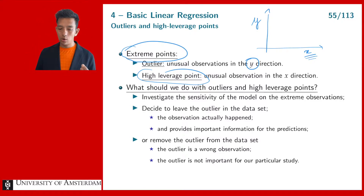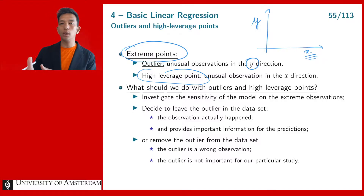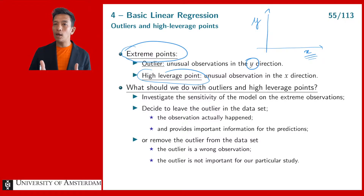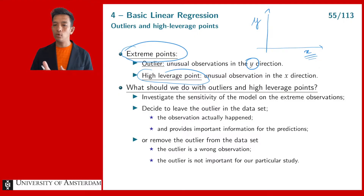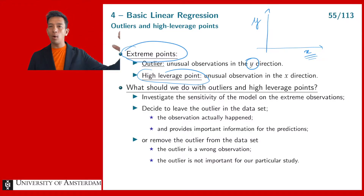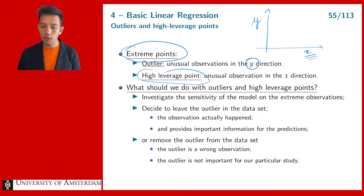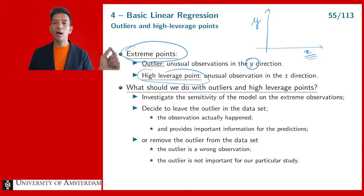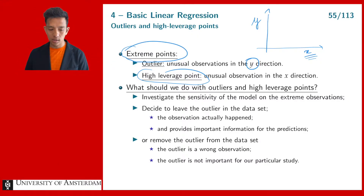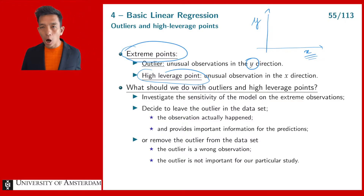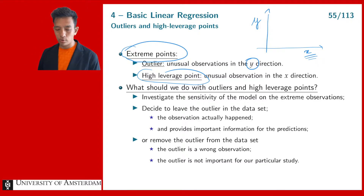Of course, you can have observations that are both an outlier and a high leverage point. So you can have an observation that is very large in the x direction, very large in the y direction, or both large in x and y — in which case it is an outlier and a high leverage point at the same time.